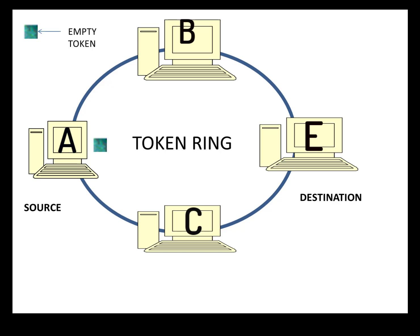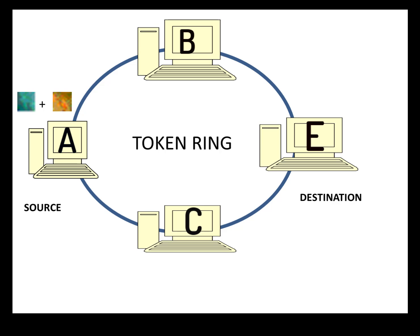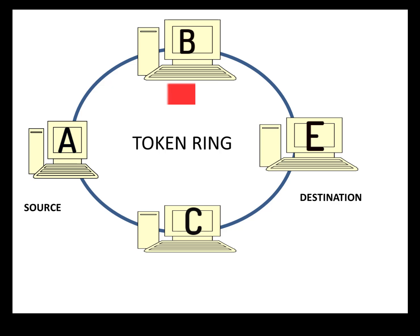Consider an example where six workstations are connected in a token ring. Workstation A wants to send data to workstation E. As they are connected in a token ring, empty tokens are circulating in that ring. When A decides to send data to E, it adds its data into that empty frame, making it a data frame and passing it along in the ring. This data frame will have all seven fields discussed earlier, including the source address of A and the destination address of E.